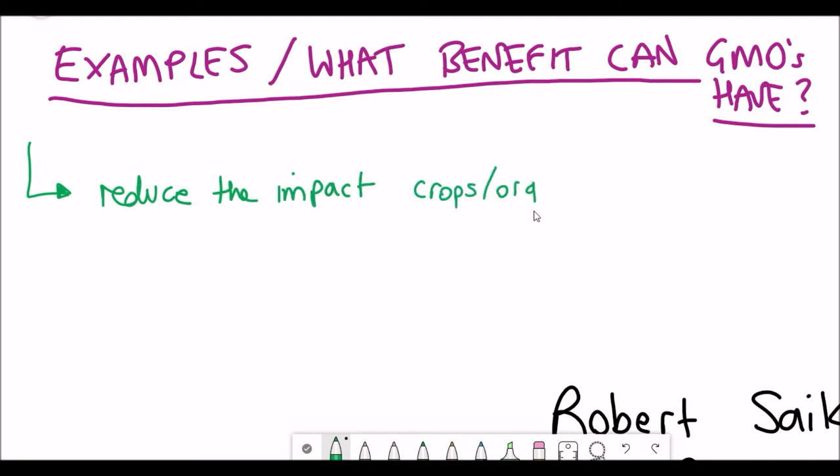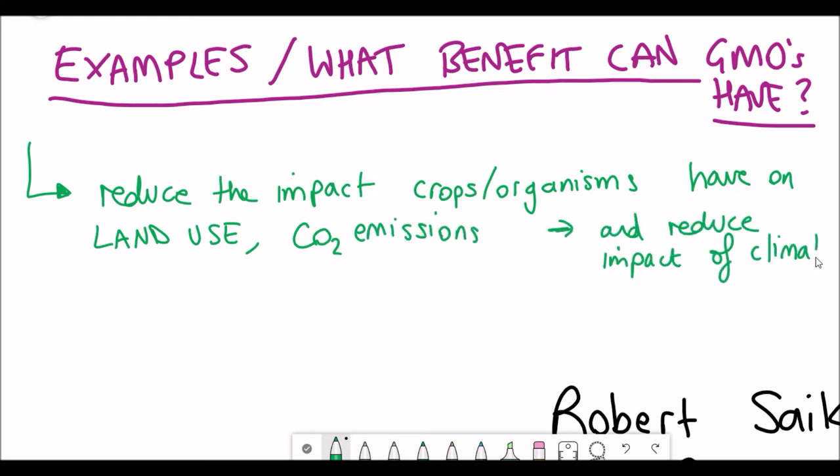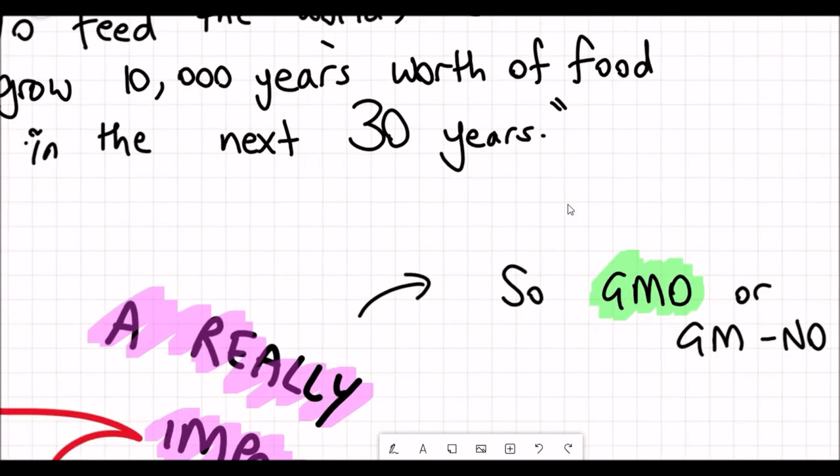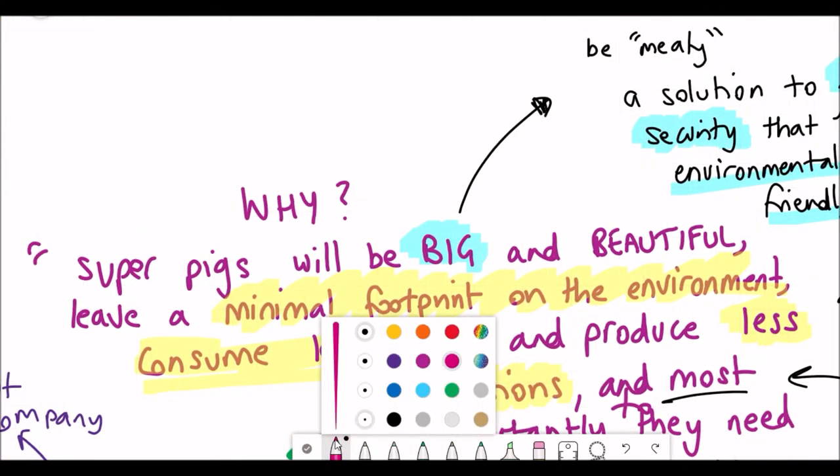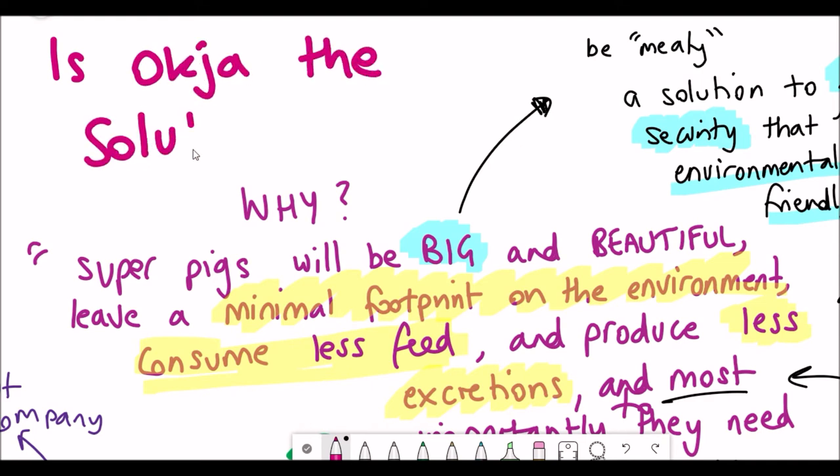As I've already mentioned, the idea behind these modified organisms is to reduce the impact that the crops and organisms have on land use and CO2 emissions, which is all to try and reduce the impact of climate change whilst feeding the world at the same time. This goes back to what the Miranda Corporation were trying to do with having a minimal footprint, consuming less feed and producing less excretions.